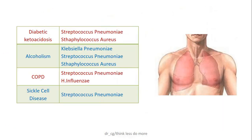In DKA patients, Streptococcus pneumoniae and Staph aureus can cause serious lung infections. Among alcoholic patients, those are more prone to infections with Klebsiella, Streptococcus, and Staph aureus. Individuals with COPD are highly susceptible to infections with Streptococcus and influenza. And in sickle cell patients, chances of Streptococcus pneumoniae infections are high.